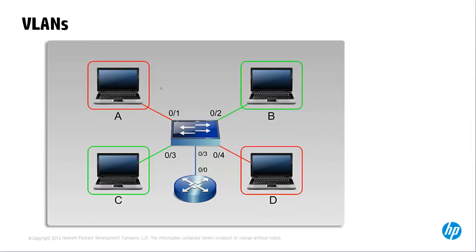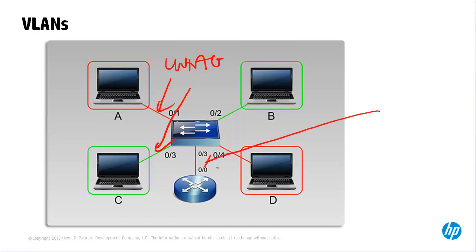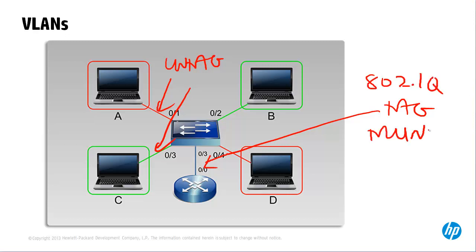In summary: the PC-facing interfaces are untagged in the relevant VLANs. The link between the switch and the router is tagged on both sides using 802.1Q — a trunk port. Sub-interfaces are configured on the router with IP addresses and VLAN numbers. Traffic sent between the switch and the router is tagged with the relevant VLANs, while traffic to the PCs is untagged.